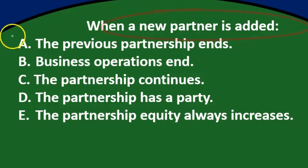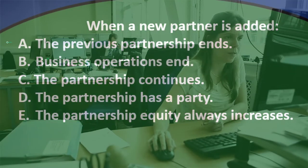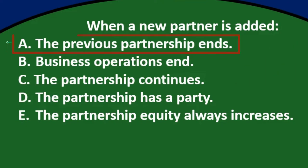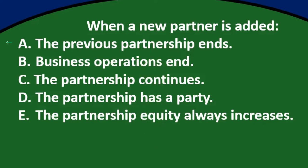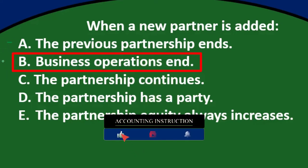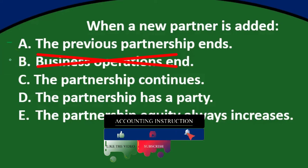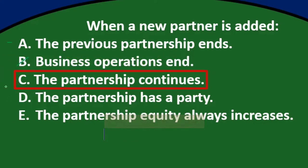When a partner is added, A says the previous partnership ends — I'll keep that for now, as it relates to the limited life of a partnership. B says operations end, and that's not typically the case because the point is to continue operations with a new partner, so B is probably not correct. C says the partnership continues, which is basically the opposite of A, so I'll keep that too.